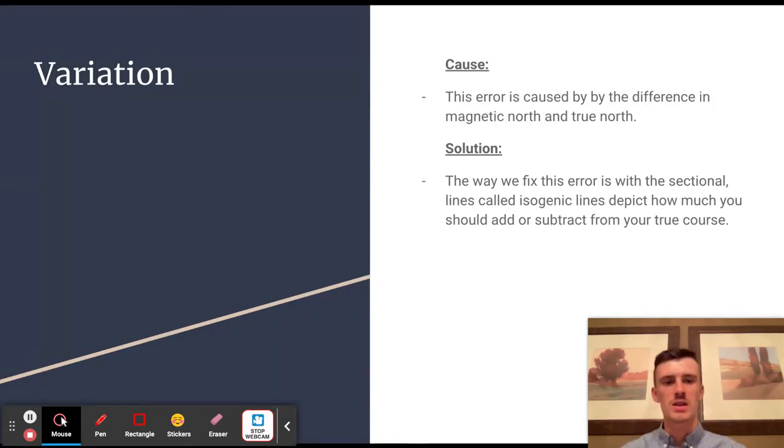The solution, the way we fix this error, is with the sectional lines called isogonic lines. They depict how much you should add or subtract from your course. East is subtract and west is add.